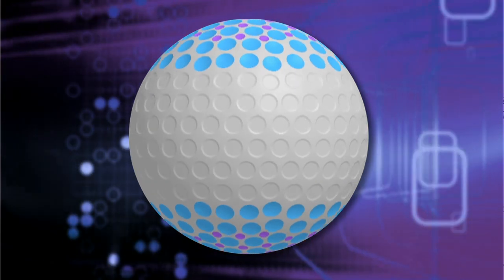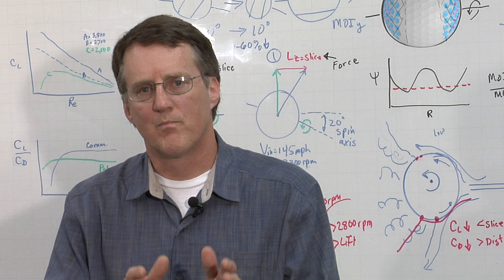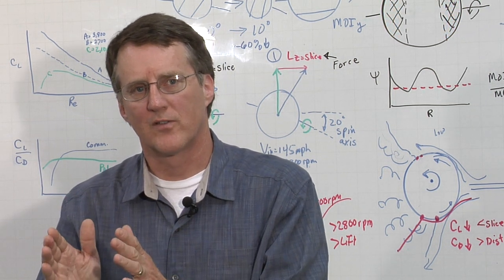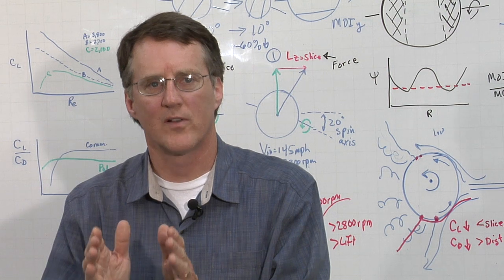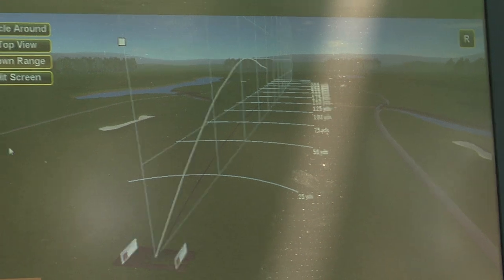The shallow dimples on the equator lower lift and establish the preferred spin axis. By combining the moment of inertia and the lift characteristics, we've created a golf ball that resists slices. Polara's self-correcting technology reduces slices by up to 75%.